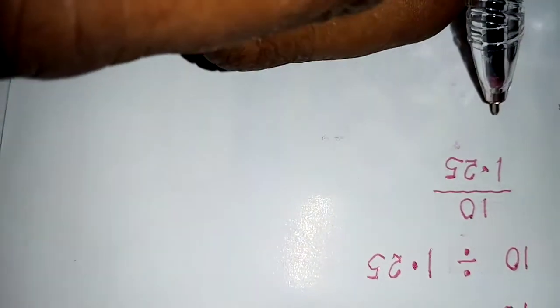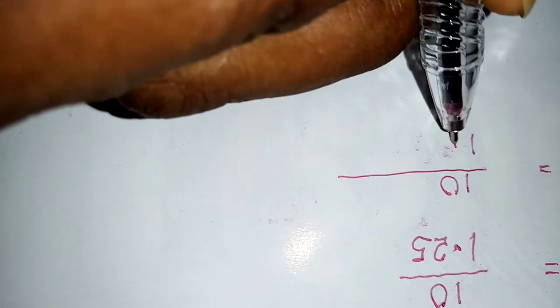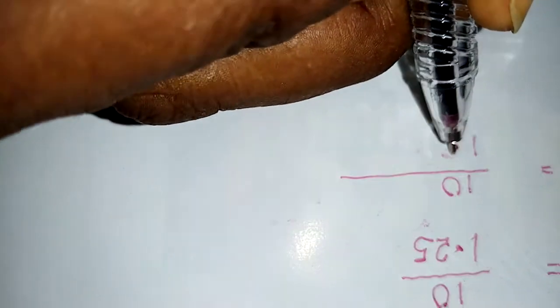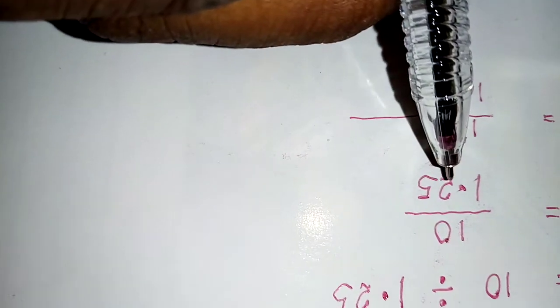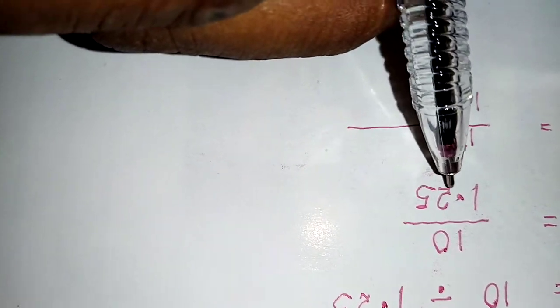Now we write our 10. Then we write our 1.25 without the point. Now the denominator here has two decimal places.